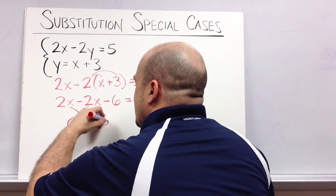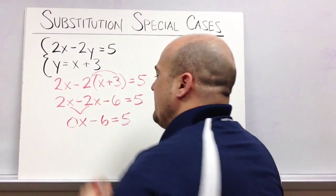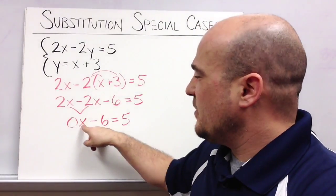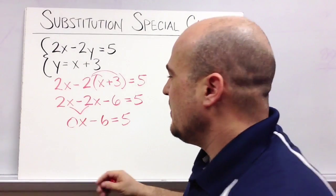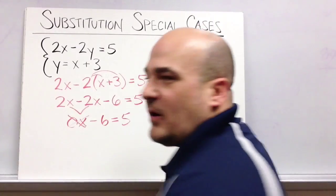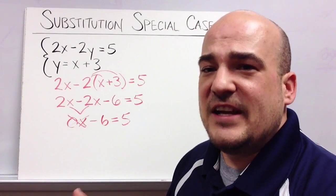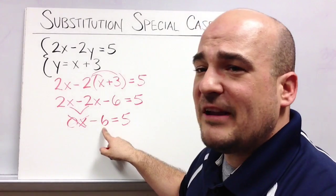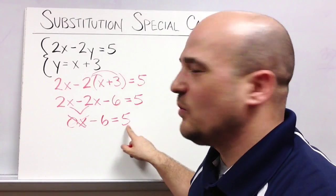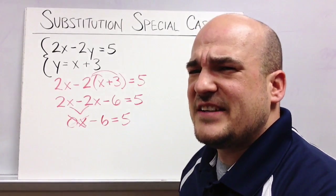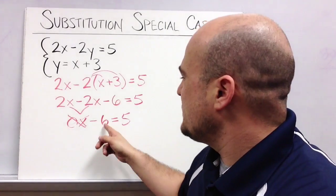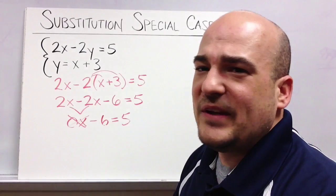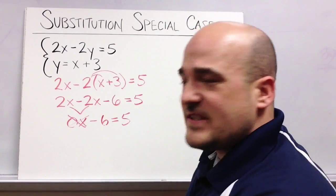0x minus 6 equals 5. Well we know that 0 times x, 0 times anything is 0, so 0 times x must be 0. And that part just goes away, it disappears, it's worth nothing, it's 0. So I'm left with negative 6 equals 5. And again I just have to decide is that a true statement or not? And obviously it's pretty easy in this case. We know that negative 6 does not equal negative 5. That's not true. So this is false.